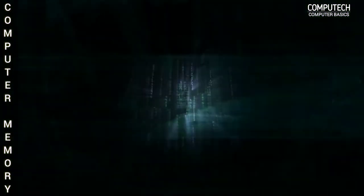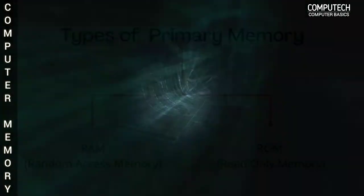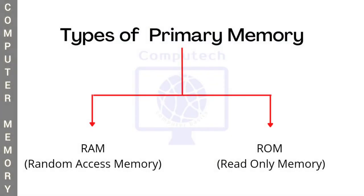Primary memory is considered faster than secondary memory. The types of primary memory are RAM (random access memory) and ROM (read-only memory).